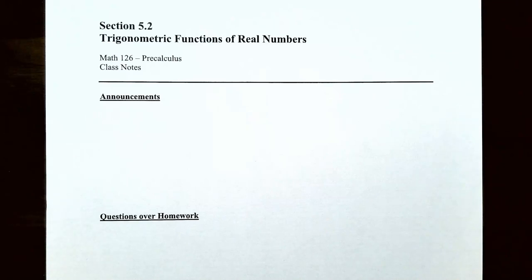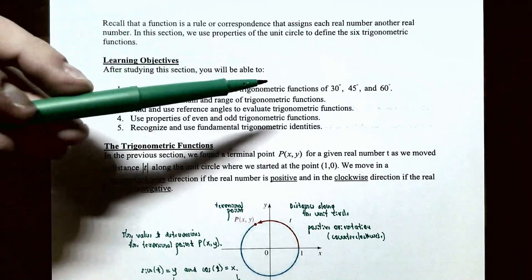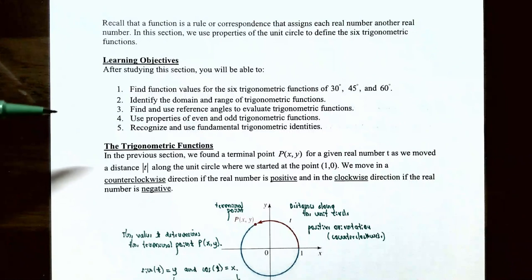Hi everyone, it's Professor Permanent and today we're going to finish up our discussion on trigonometric functions of real numbers. In the previous video we talked about how to find the values of the six trigonometric functions for 30 degrees, 45 degrees, 60 degrees, and their equivalent in radians: pi/6, pi/4, and pi/3. We also identified the domain and range of the trigonometric functions. In this video we're going to talk about how to find and use reference angles to evaluate trigonometric functions, how to use the properties of even and odd trigonometric functions, and how to recognize and use fundamental trigonometric identities.